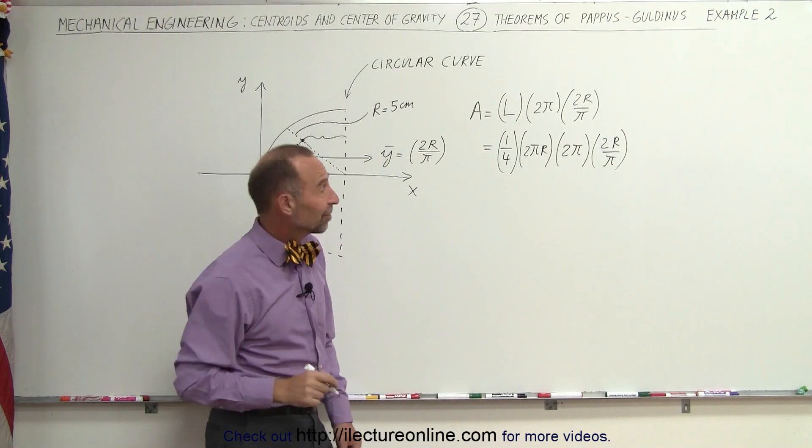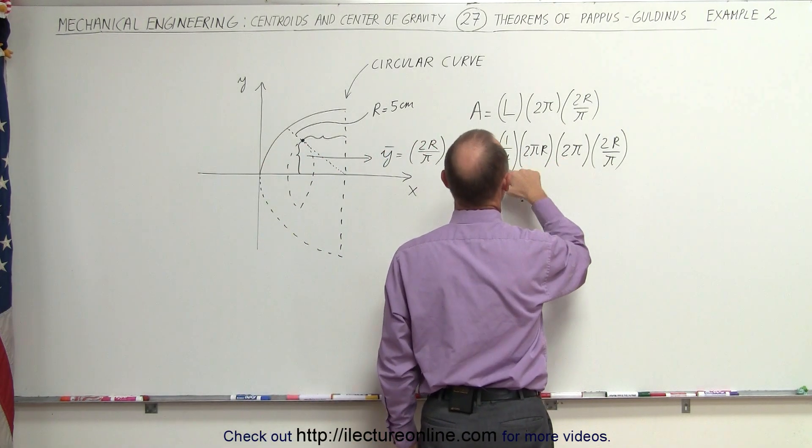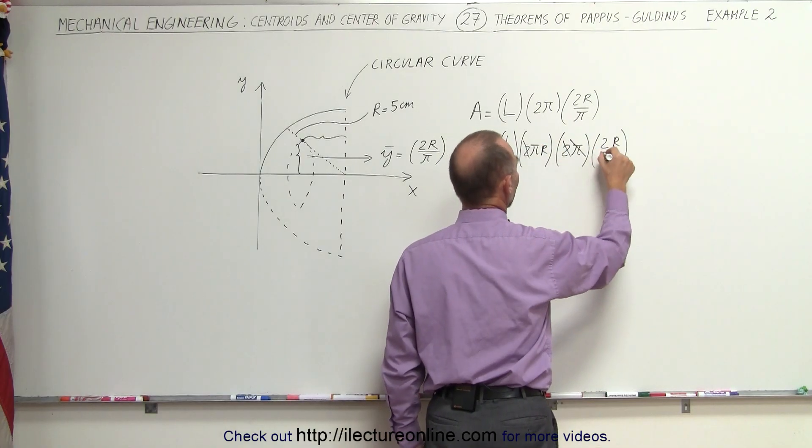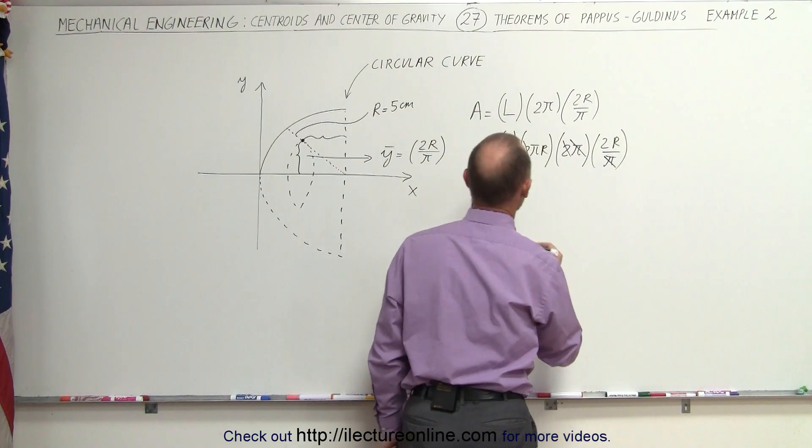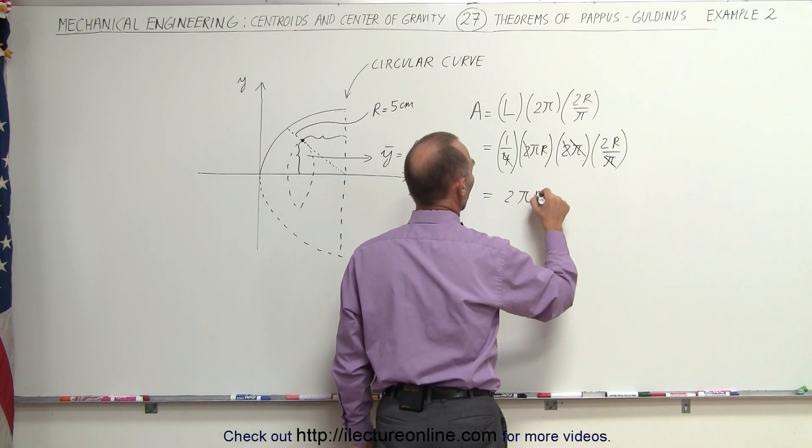Let's see what we get when we simplify that. We have a 2 times 2, that's 4, divided by 4, that cancels out. We have a pi here and a pi there, that cancels out. Let's see what we have left. This is equal to 2 pi r squared.